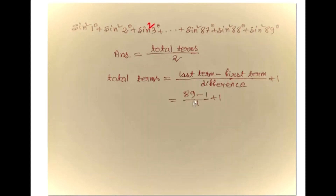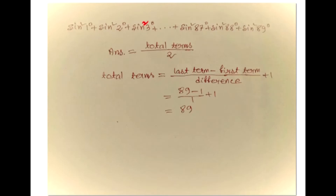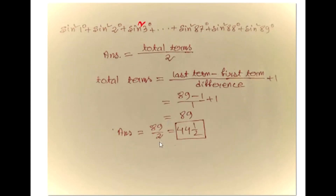So here the last term is 89, the first term is 1, and the difference is 1. So the total terms is 89. So our answer will be 89 divided by 2, which is 44 and a half.